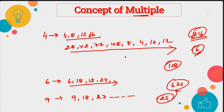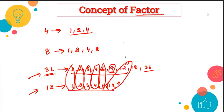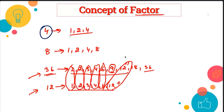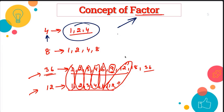Now, what is a factor? The factor means the number which is going to divide that number. We discussed four's multiples — four, eight, 12, 16. But when we are going to find the factor, that is actually dividing — the numbers which are going to divide four. So one is also going to divide four, two is also going to divide four, and four is also going to divide four. All these three numbers are factors of four.